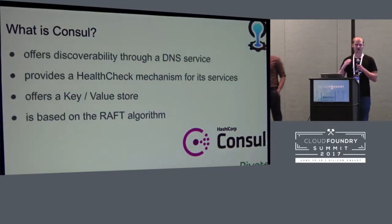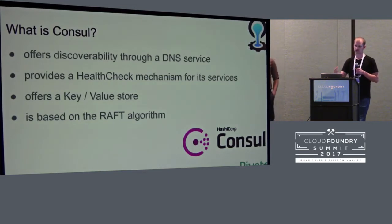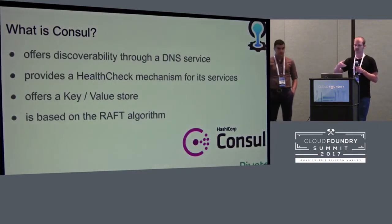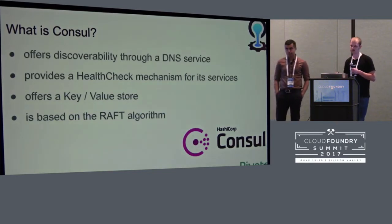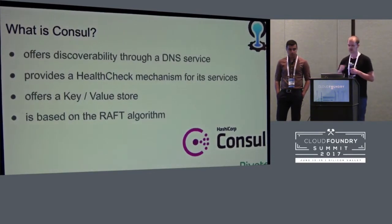Some of you may not know what Consul actually is and what it does in the system — you'll just see three VMs popping up extra in your deployment that are notoriously broken. Consul is a clustered system that offers discoverability through DNS. This allows system components to register routes to this clustered system that other components can query to discover other components in your system — your UAA, database, Diego, whatever. It provides health checks on those services so that if a node dies, it will deregister that route. It also offers a key-value store and is based on the Raft algorithm.